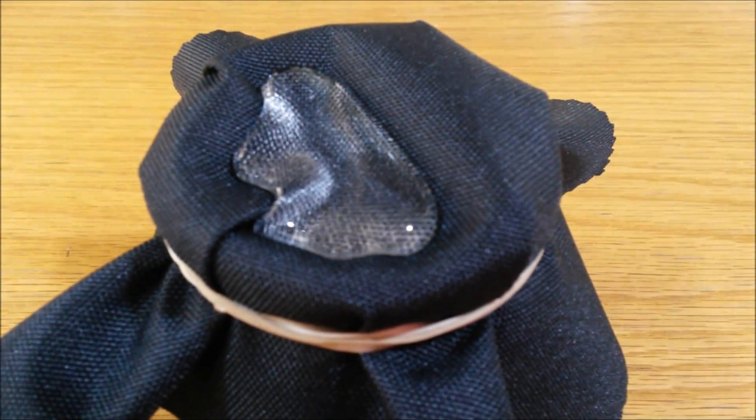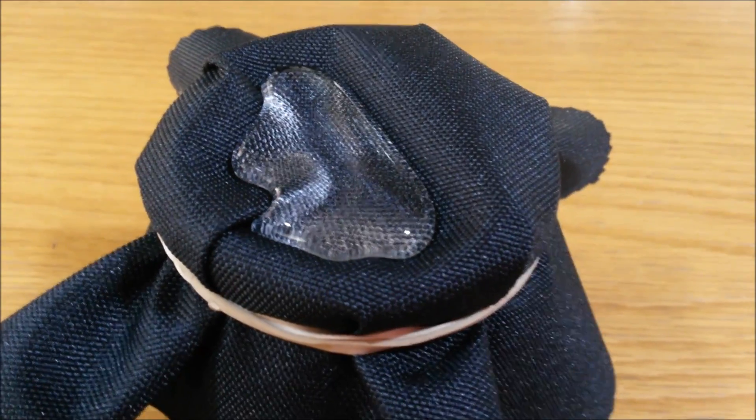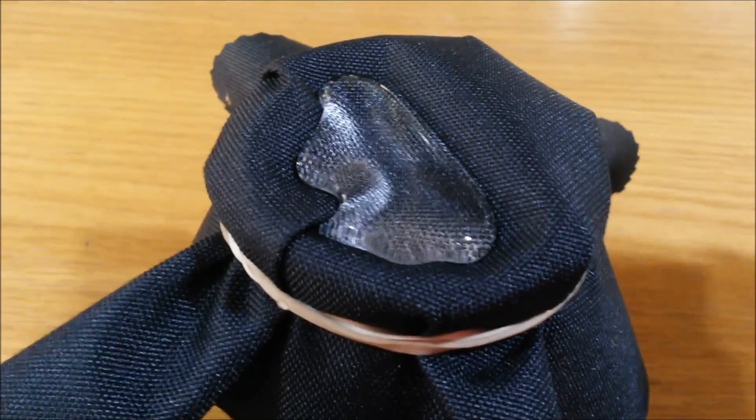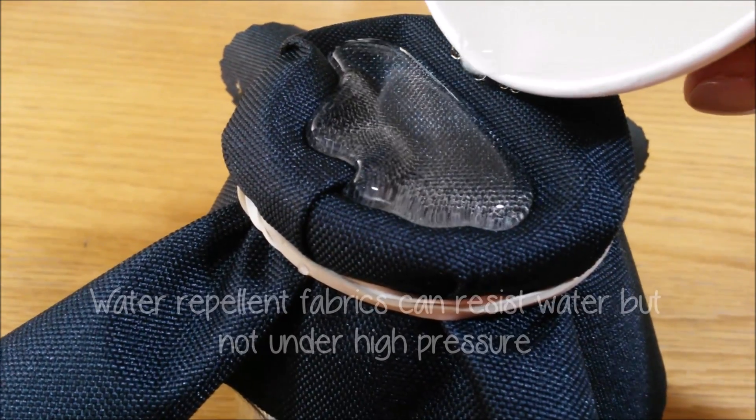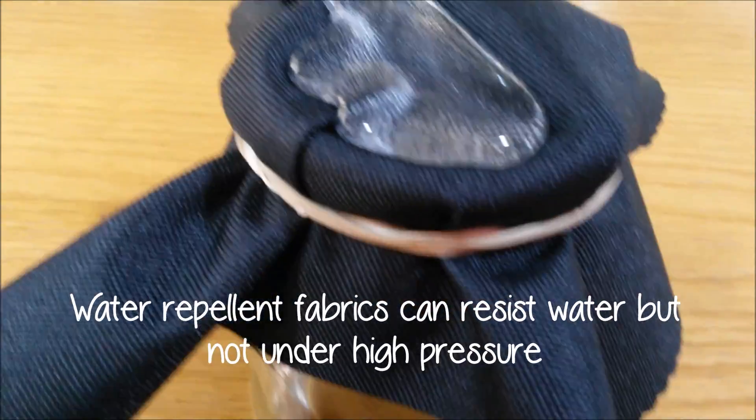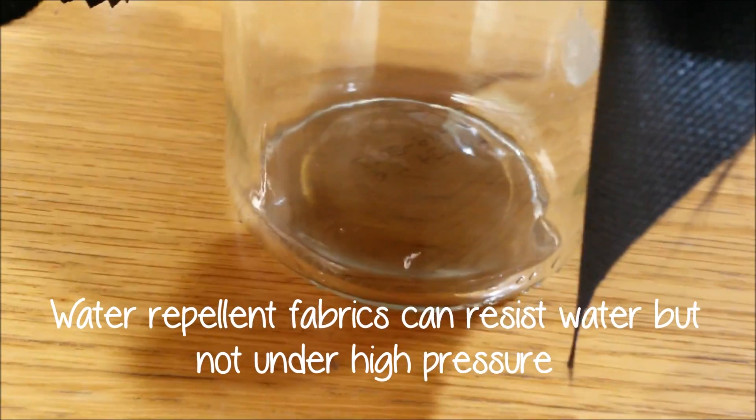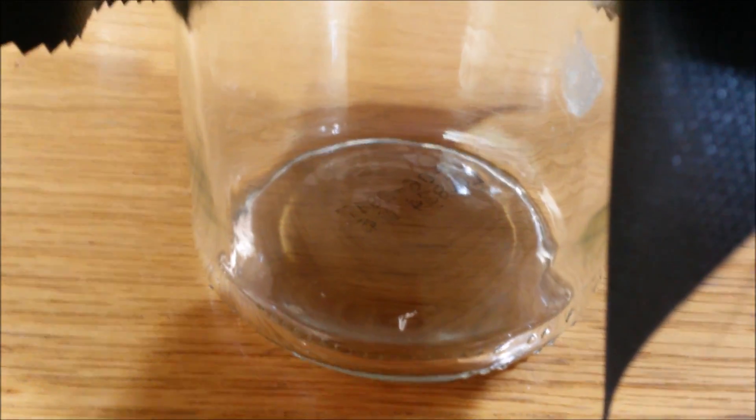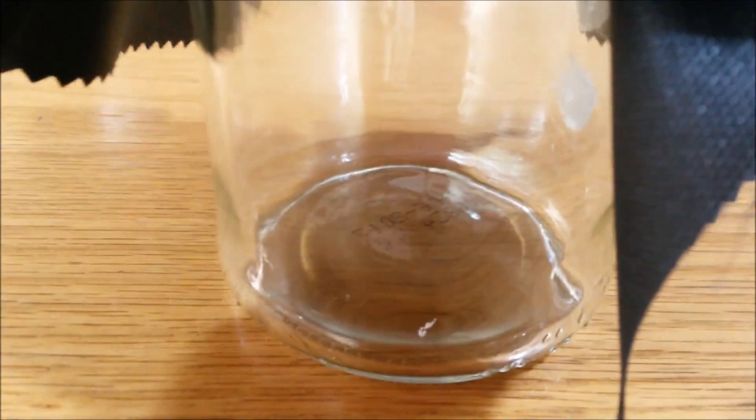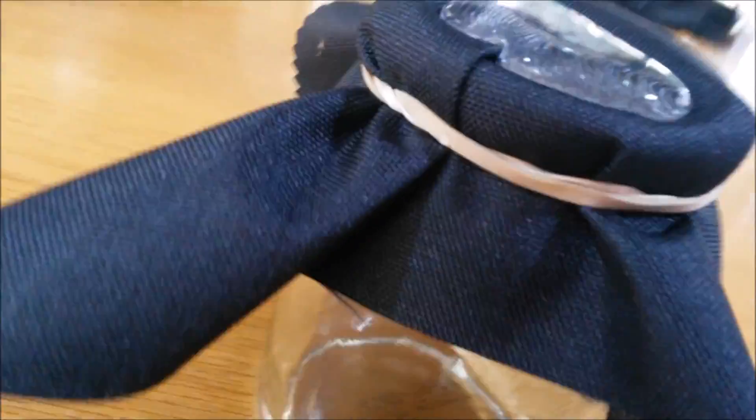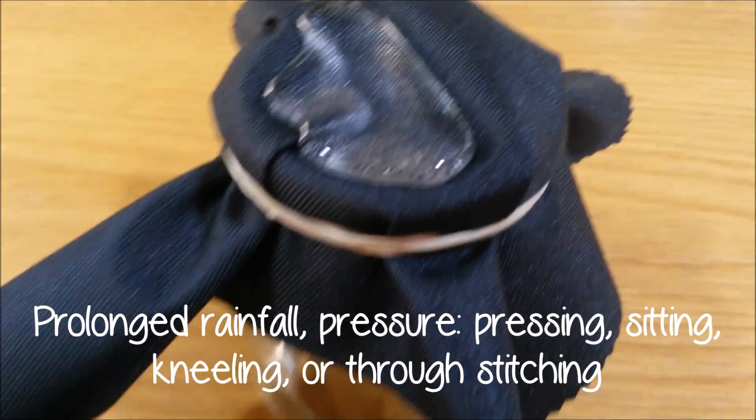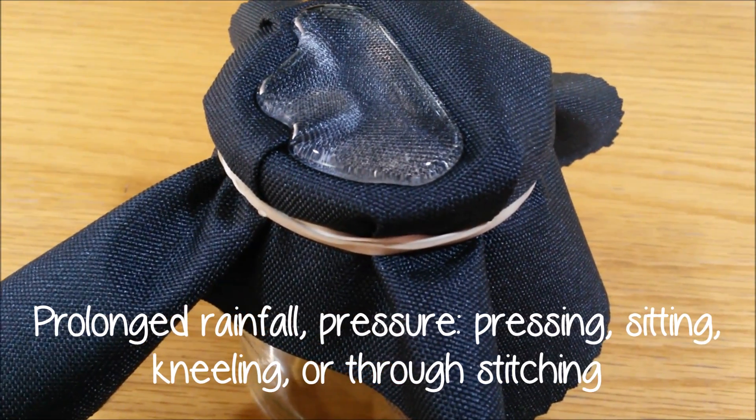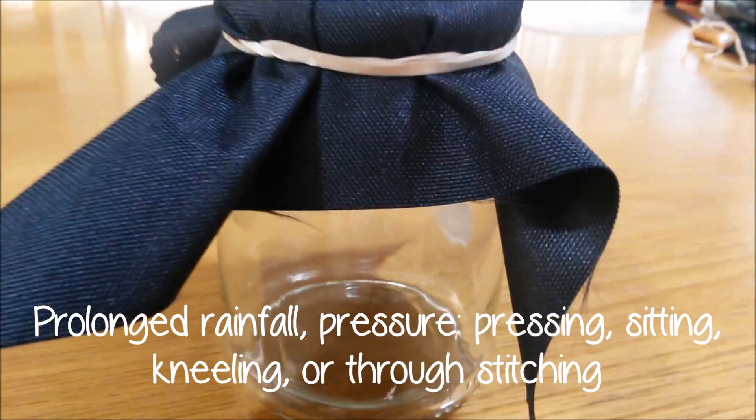For clothing to be waterproof, seams must also be taped to prevent water from being able to go through the holes in the stitching. On the other hand, water-repellent fabrics will repel the penetration of moisture, meaning that they are water-resistant but only to a degree. Water easily runs off the fabric surface, yet some water would pass through the fabric under prolonged rainfall or when more pressure is applied, such as pressing on the fabric, sitting, or kneeling. As already mentioned, water could still go through the stitching areas.